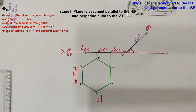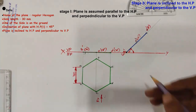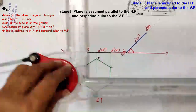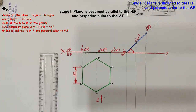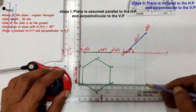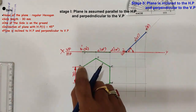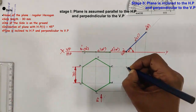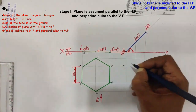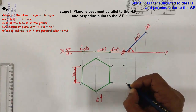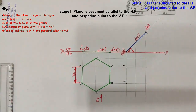Then we draw the related top view. Draw projectors passing through A', B', C', D', and E' vertically downward. Also draw projectors through all the corners of the hexagon from the initial position top view horizontally in the rightward direction. Locate the intersection points — the projector from A' meets the horizontal projector from A to give point A1, and the projector from B' meets the horizontal projector from B to give point B1. Similarly, locate all remaining points.